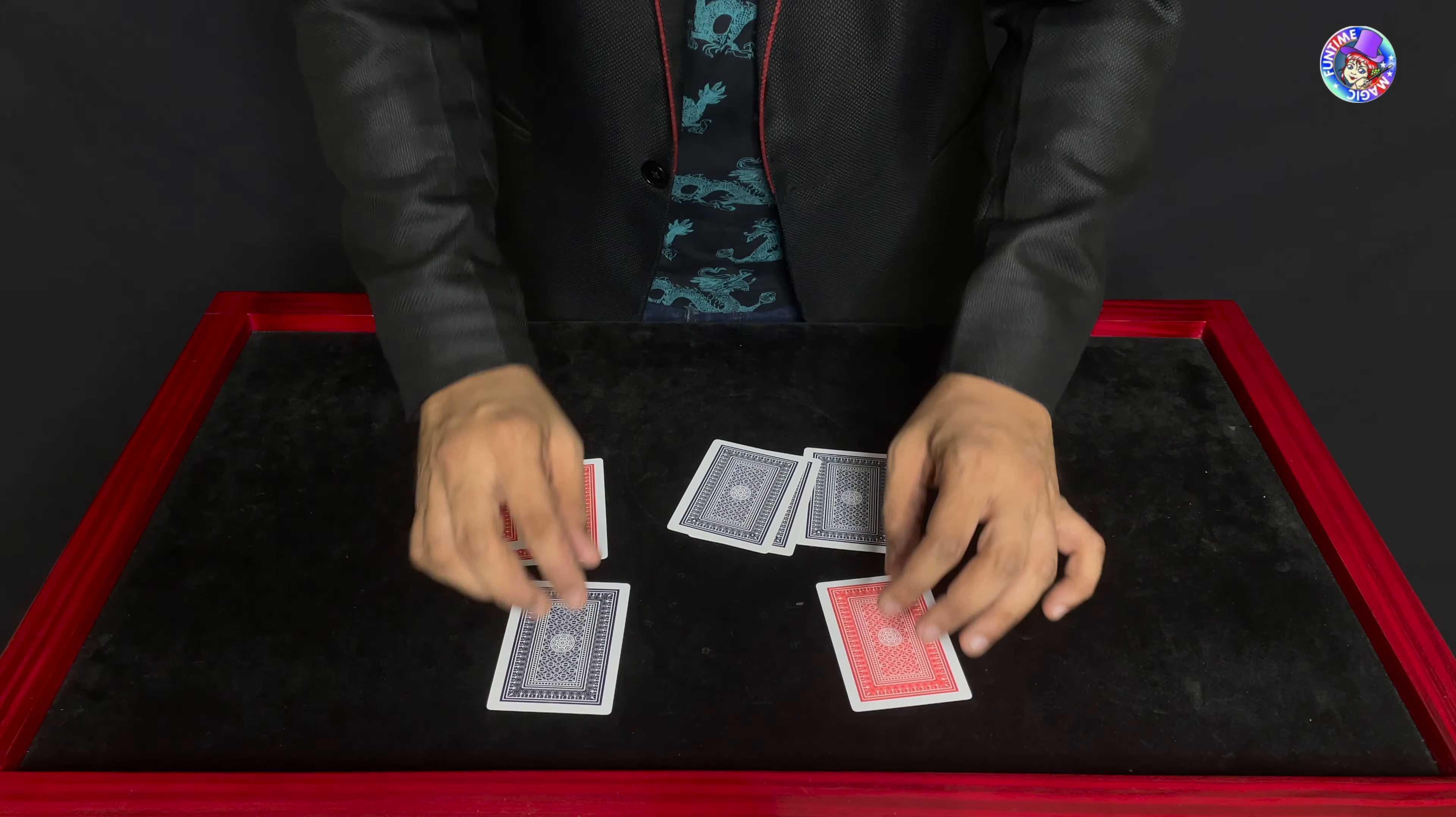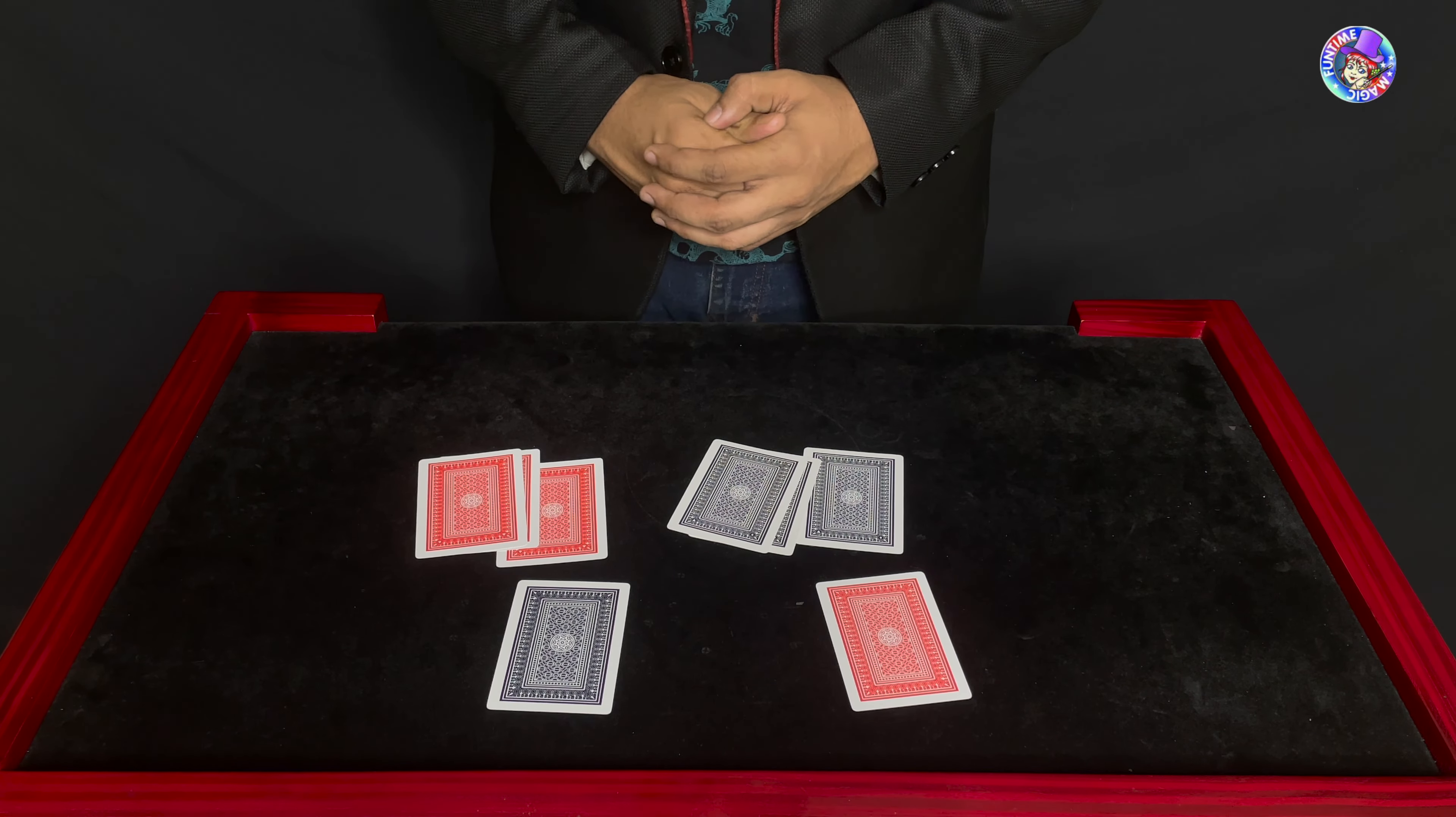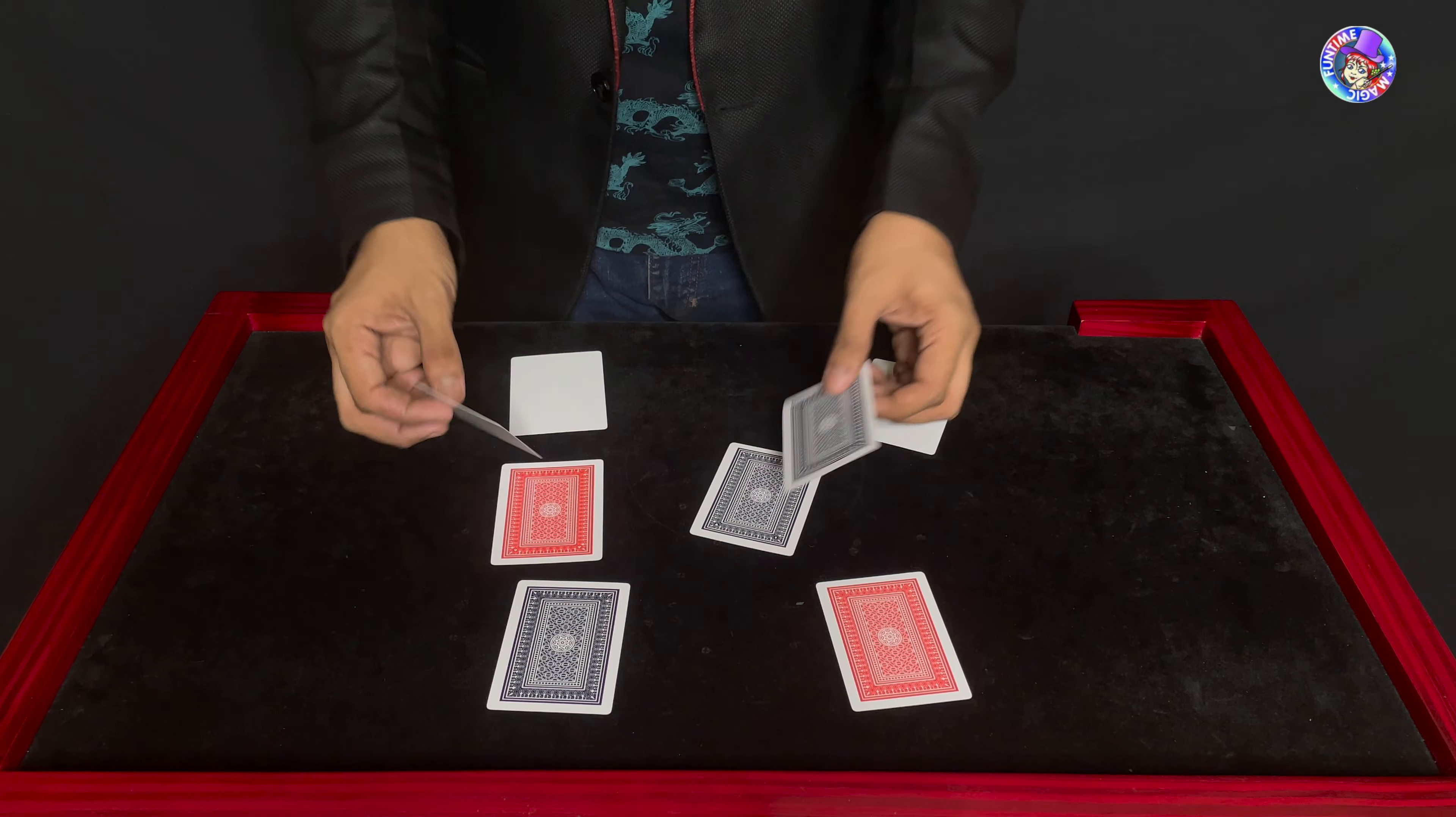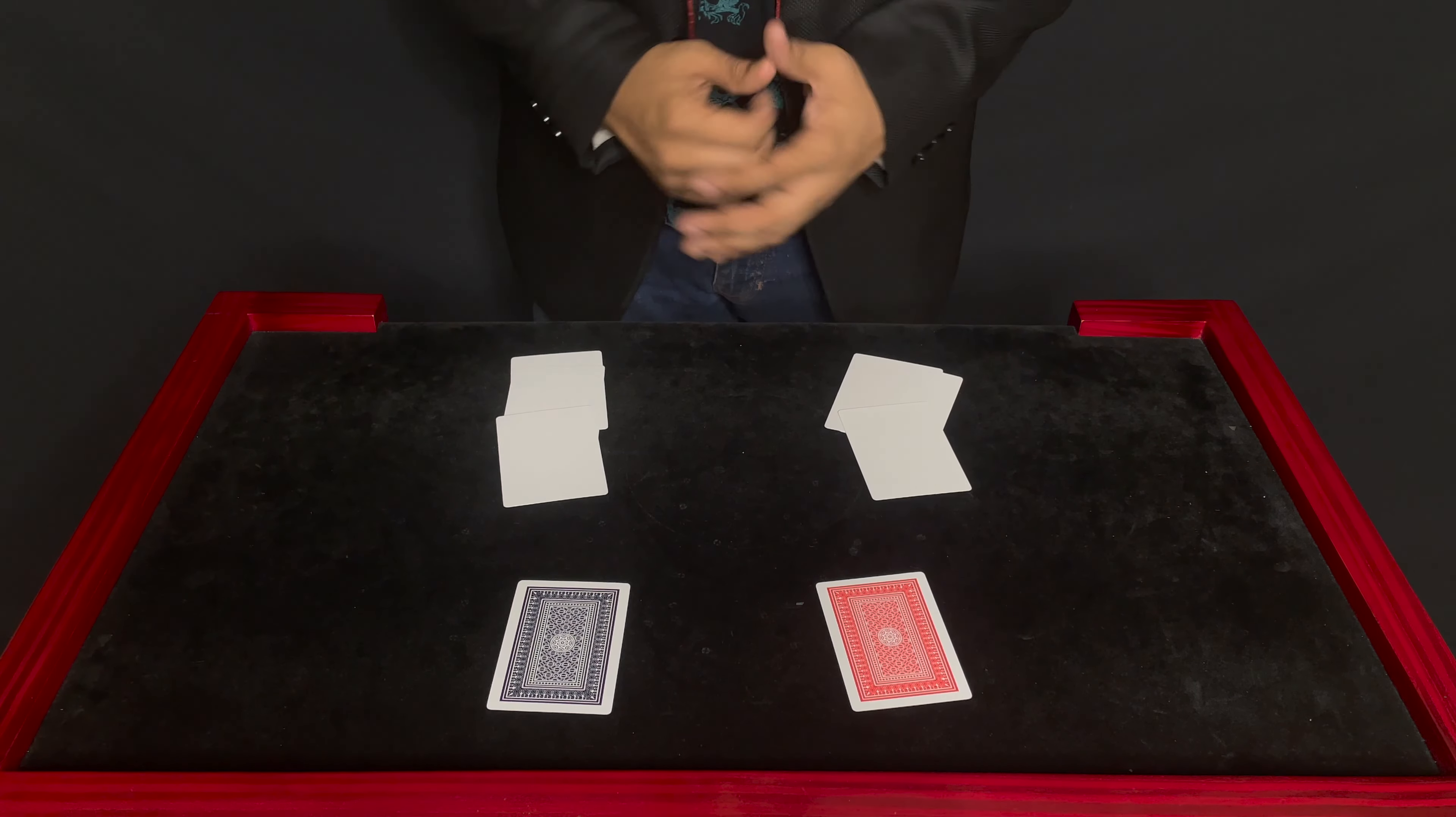It's not just that you could have named any of the fours, but you named the four of clubs and the four of diamonds. Because if you had named any of the other fours, the trick would not have worked, because the other fours do not even exist. Thank you so much for watching.